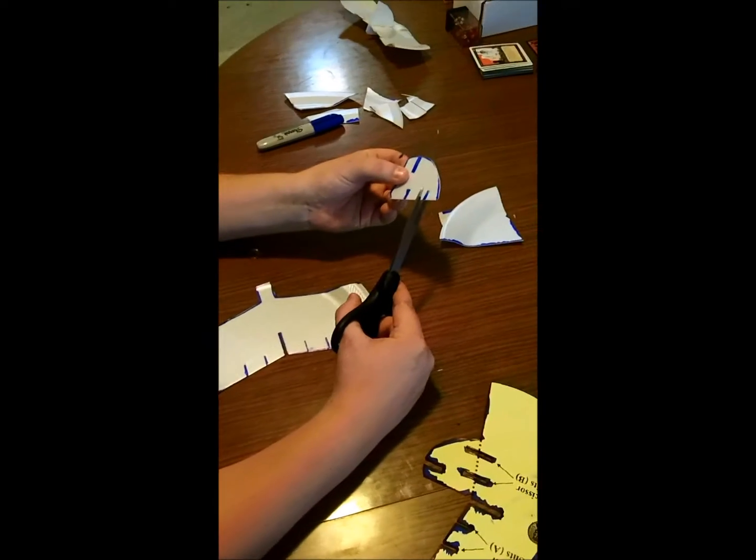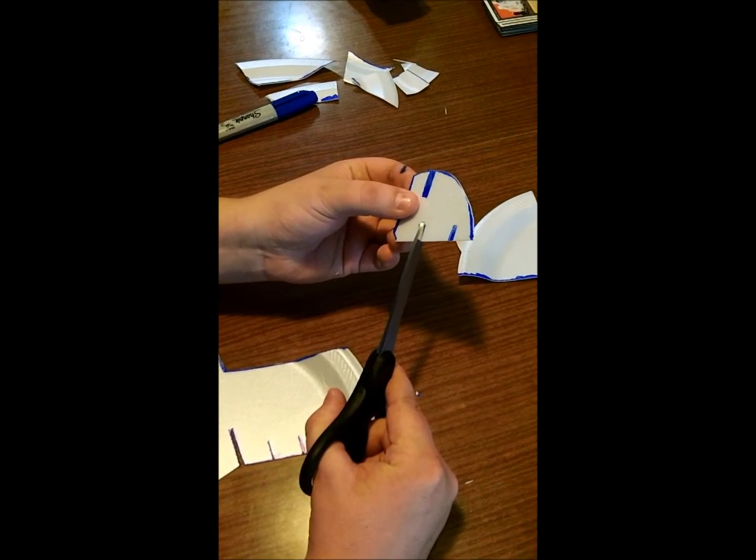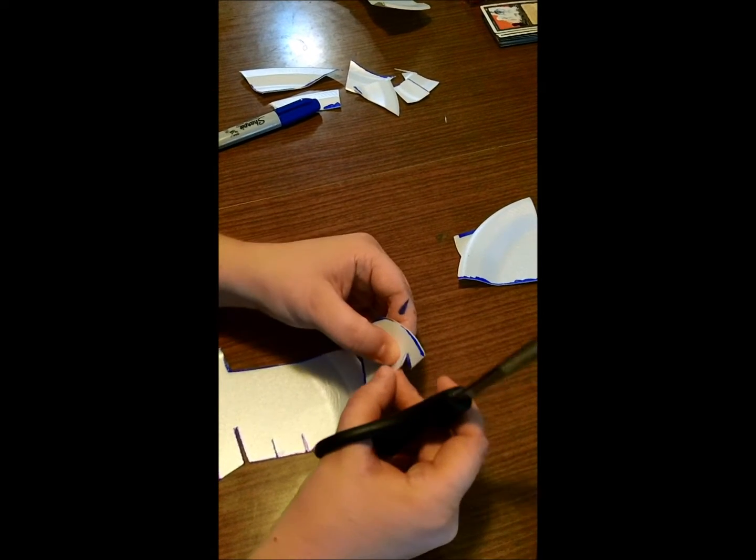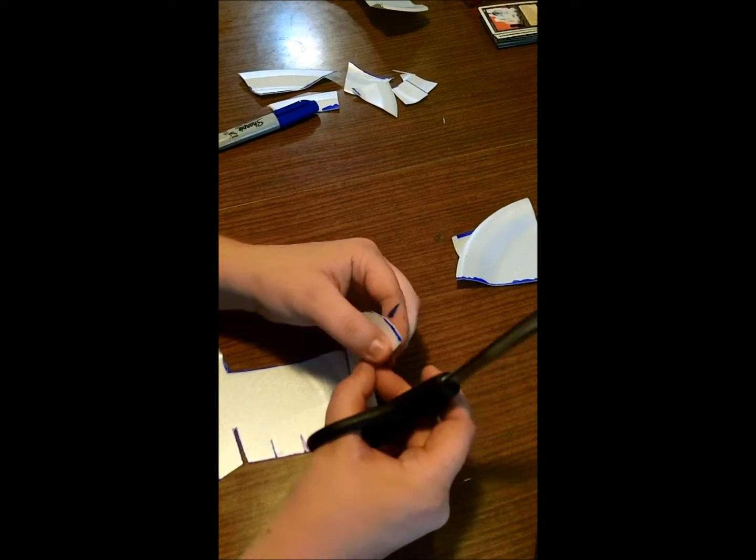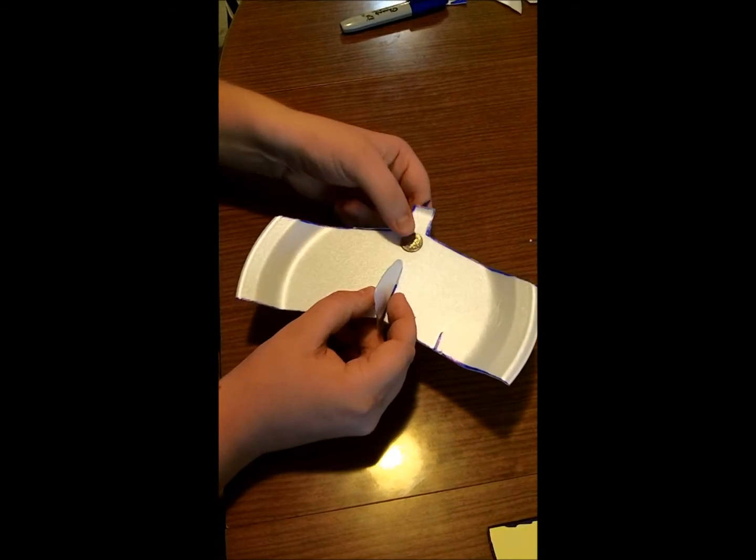Now take your scissors and cut the two slits we drew onto the rudder, just like that, so that you have something that you can move to control where the plane is gonna turn.